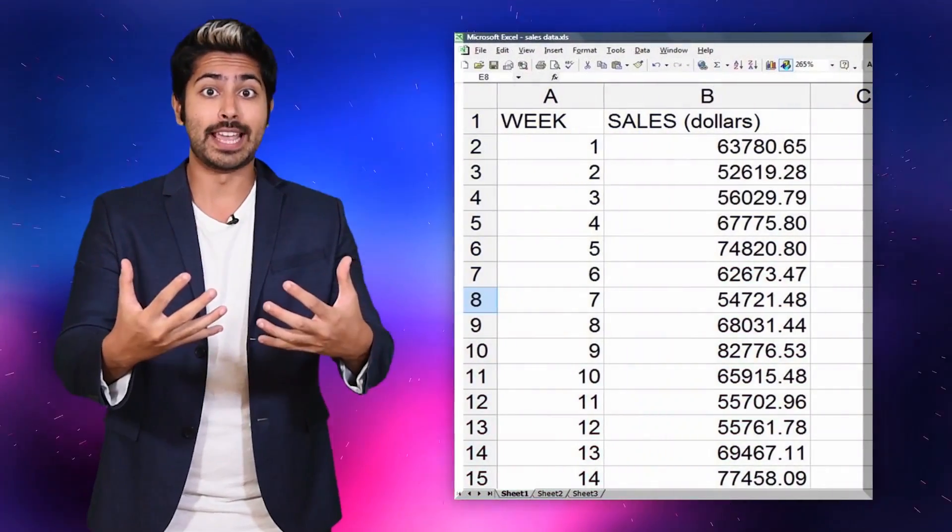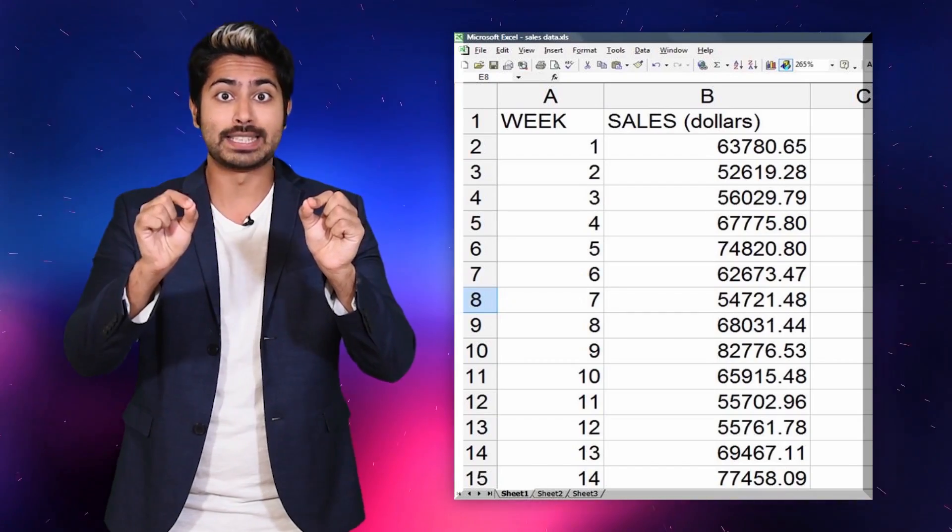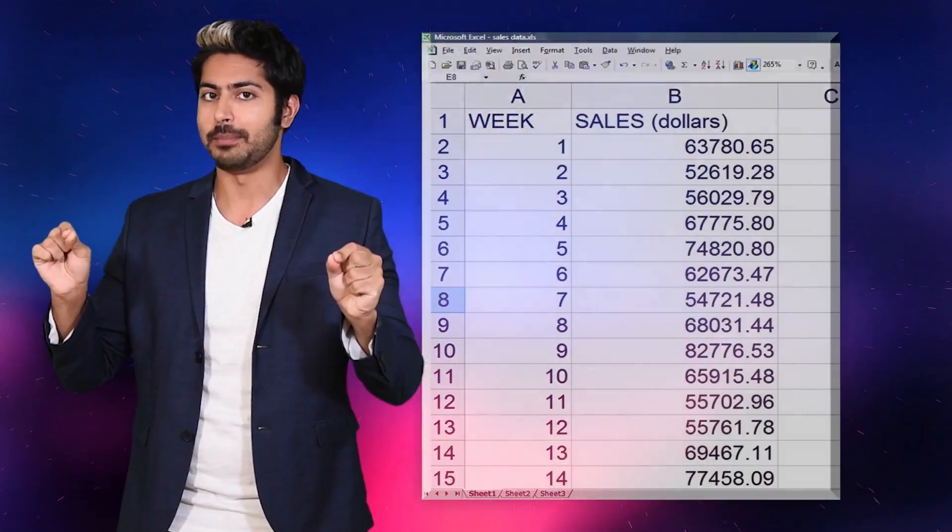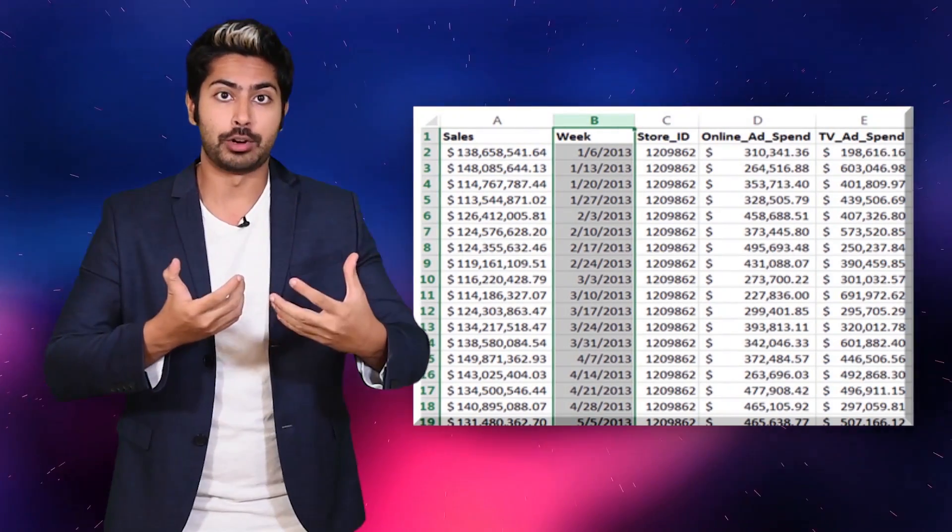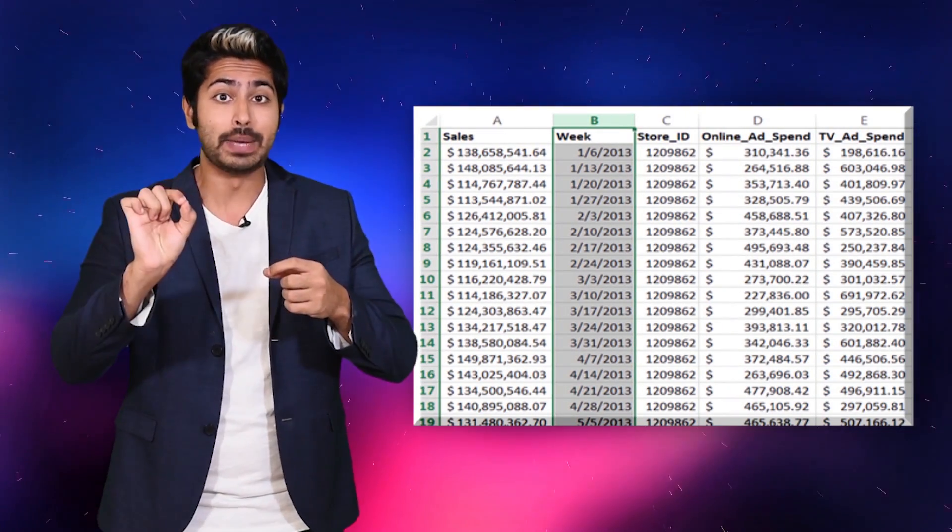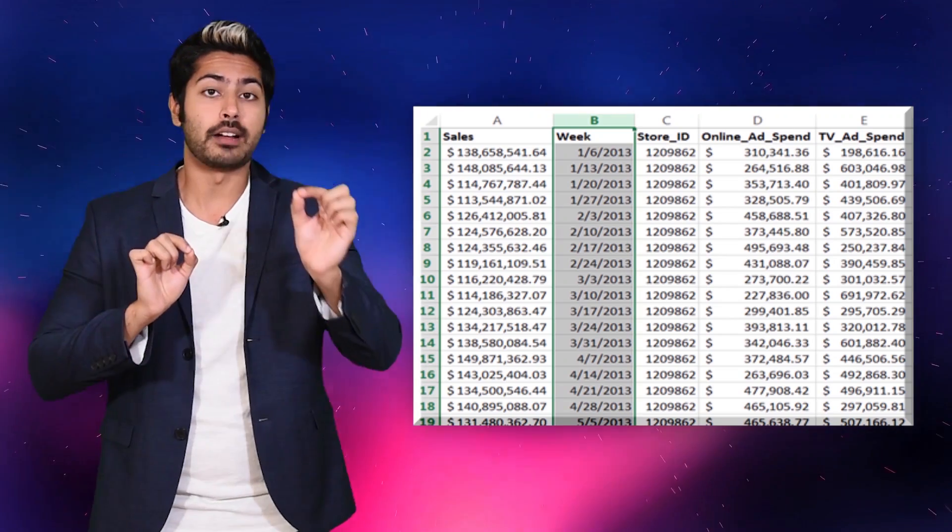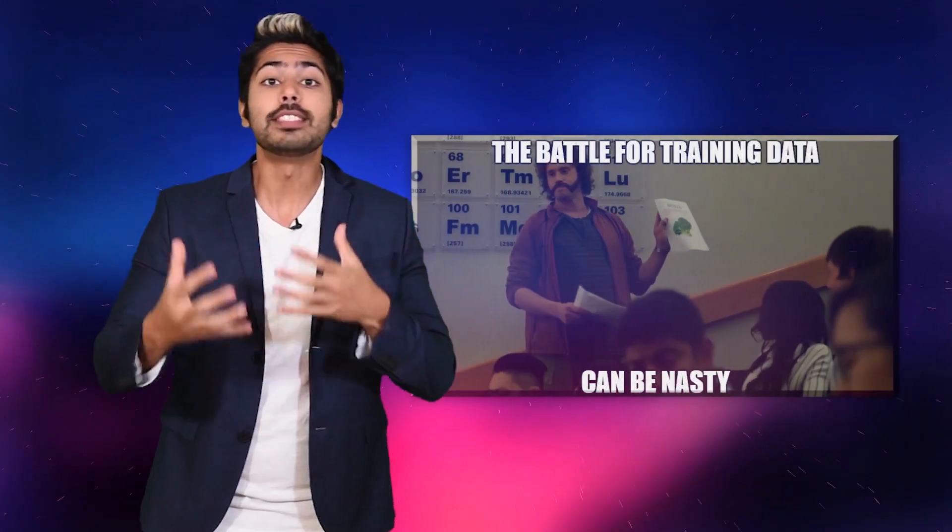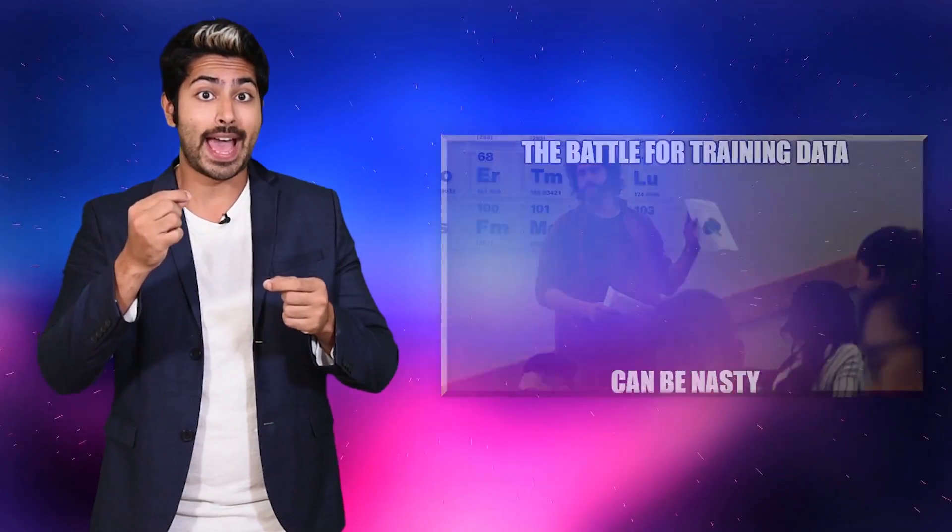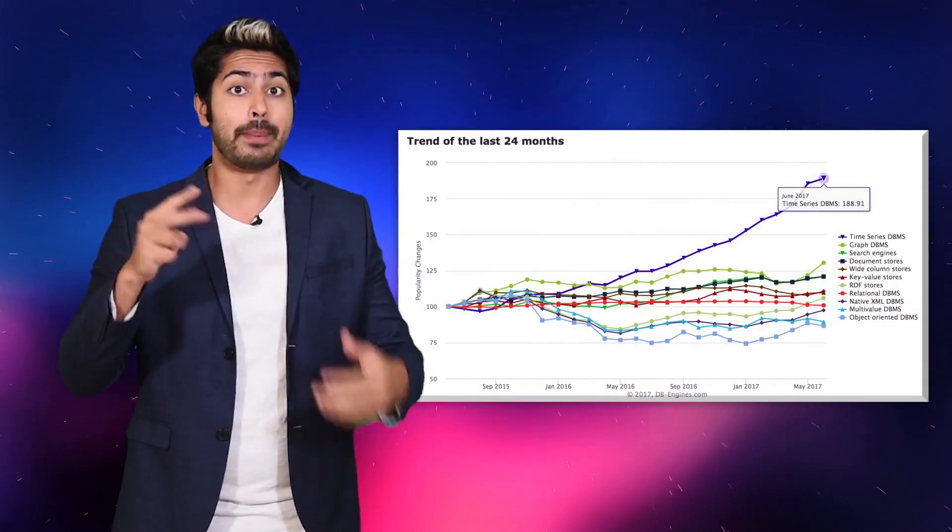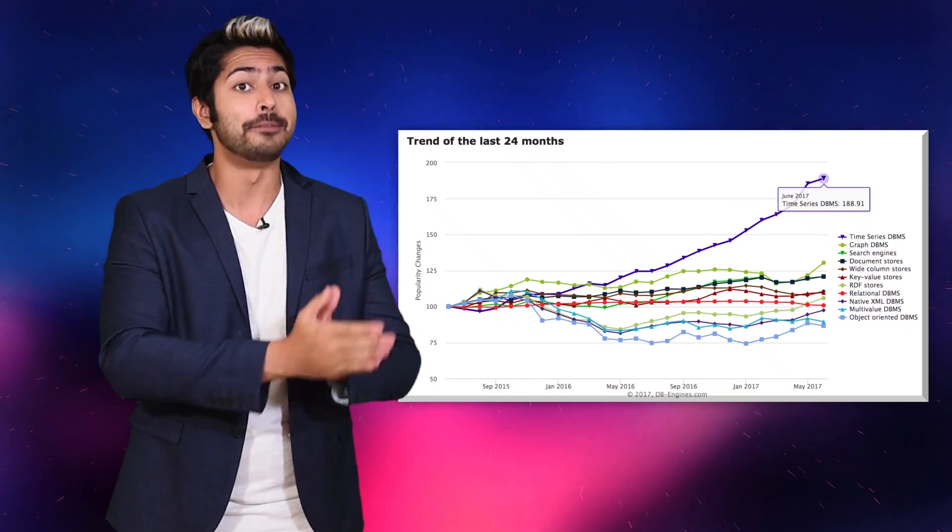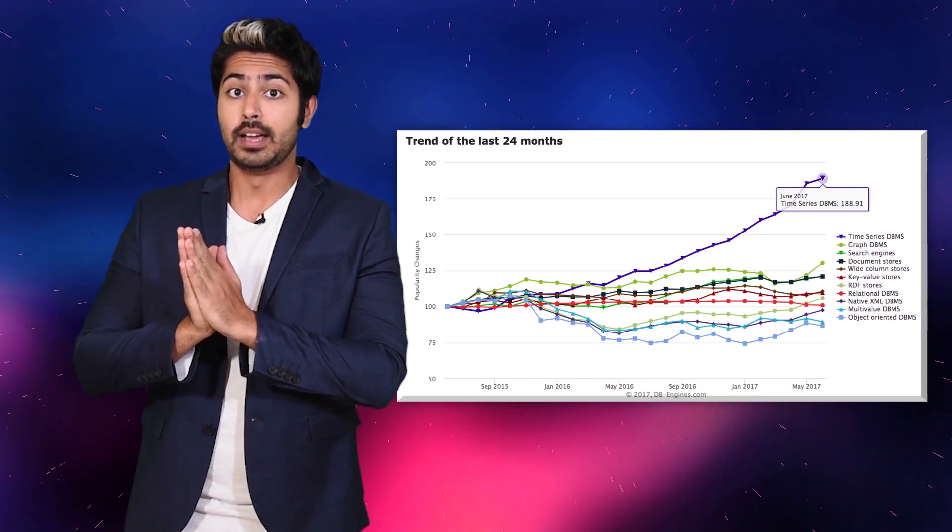We can think of time series data as a sequence of data points that measure the same thing over an ordered period of time. Another way of thinking about it is that it's a series of numeric values each with its own timestamp defined by a name and a set of labeled dimensions. And we're seeing this type of data set become more common. In fact, if we look at developer usage patterns in the past two years, time series databases have emerged as the fastest growing category of databases.